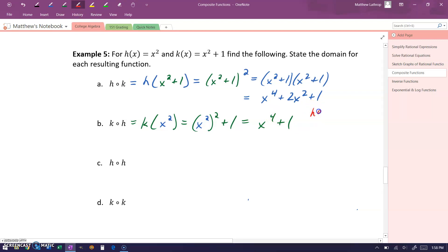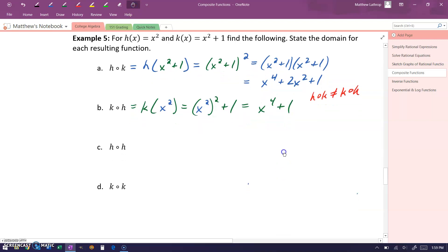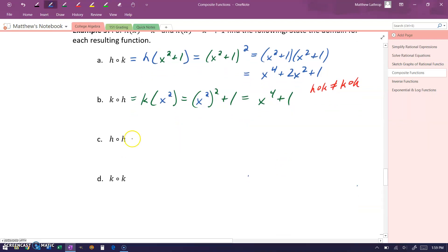Again, note here that h of k was not equal to k of h, so that order matters. We can look at taking these functions composed with themselves, so we could take h evaluated at x squared, which would be x squared squared or x to the fourth power.